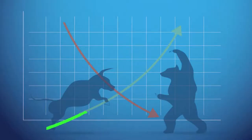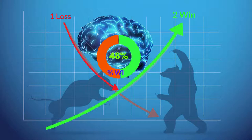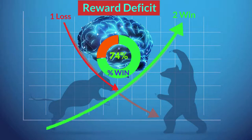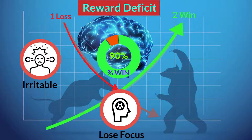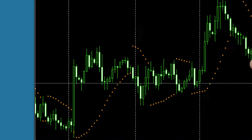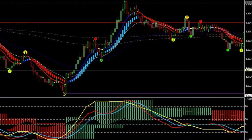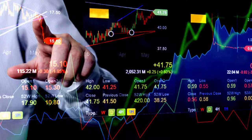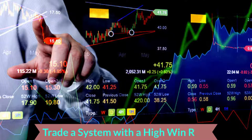If a trading system does not provide a good win-to-loss ratio and a high win rate, many traders' brains will become reward deficit, which would make them irritable, lose focus, and feel unconfident. This is the reason that many traders constantly change their trading systems, since they seek to avoid losses and can only trade comfortably with a system that offers a high win rate.